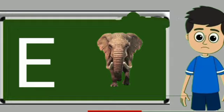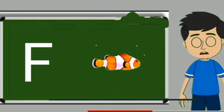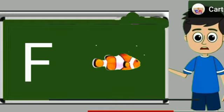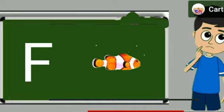E for elephant. Elephant means hathi. F for fish. Fish means machli.